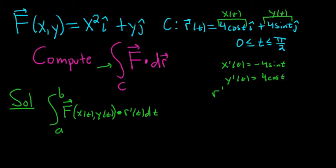So r prime of t is negative 4 sine t i hat plus 4 cosine t j hat. You just differentiate each little piece. So this is equal to, A here is 0, B is pi over 2. So we're going from 0 to pi over 2.